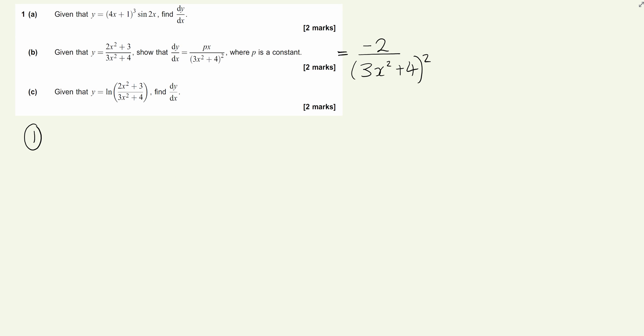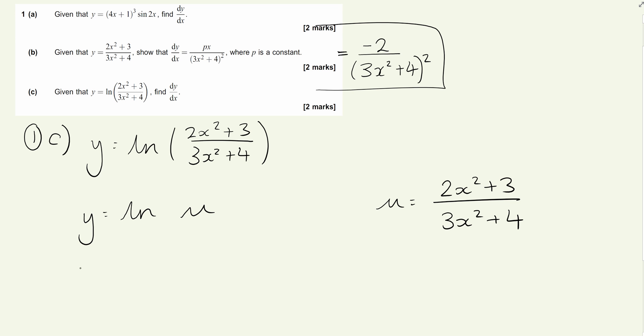On to part c. I've put the answer to b up here because we're going to refer back to that in a moment. We're given that y equals ln of what we've just differentiated: (2x² + 3)/(3x² + 4). This is your chain rule question, although we've already done chain rule in part a.